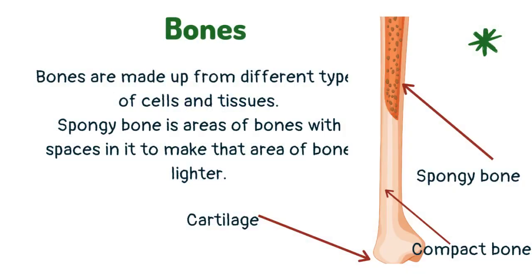Bones are made up from different types of cells and tissues. Spongy bone is areas of bone with spaces in it to make that area of bone lighter.